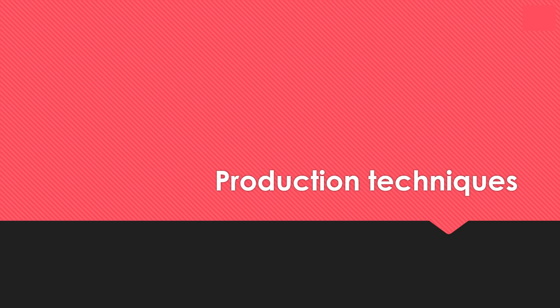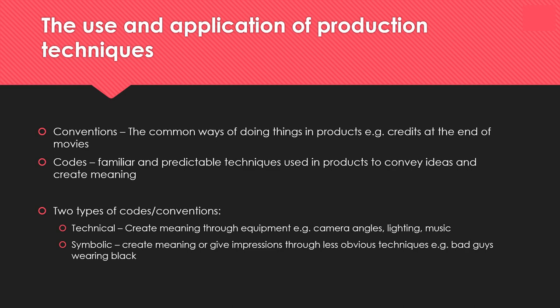Let's start by looking at production techniques first. There are different types of production techniques and the usual reason is to create some sort of code and convention. A convention is the common way of doing things in products — for example, credits at the end of movies. A code is a familiar and predictable technique used in a product to convey ideas and create meaning. There are two types: technical or symbolic. Technical is when it's used through some sort of equipment like camera angles, lighting, and music. Symbolic is when meaning is created through an impression — usually some sort of connotation or a less obvious technique.